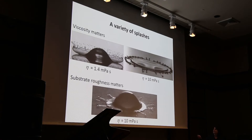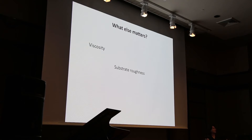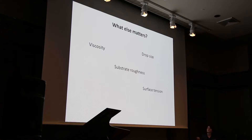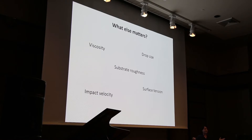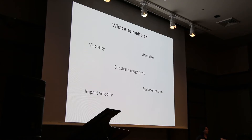On the rough substrate, the drop was immediately ejecting droplets right at the contact line. Clearly viscosity matters and substrate roughness matters. If I ask you what else might be important, you might guess the drop size — and that's true. Surface tension could be important — also true. The impact velocity, how fast the drop hits — all of these are very good guesses and they really influence the outcome of a splash. Both liquid properties and substrate properties determine the outcome of a drop impact.